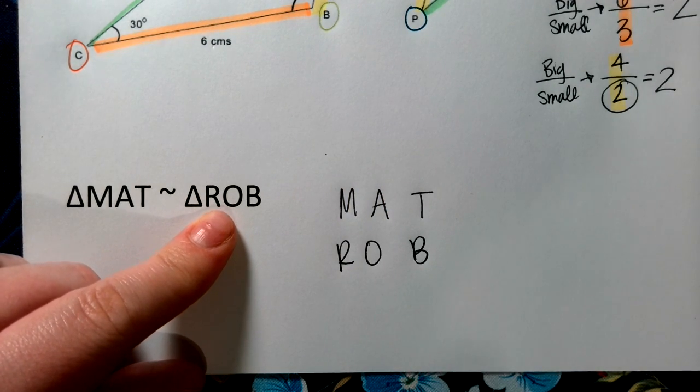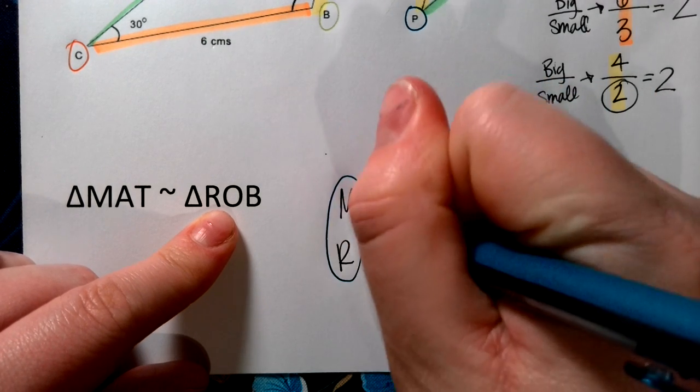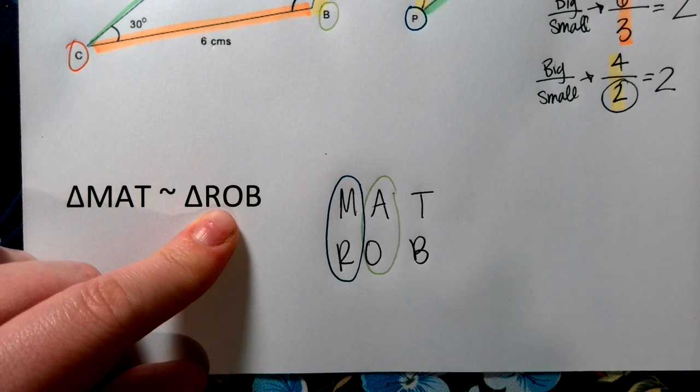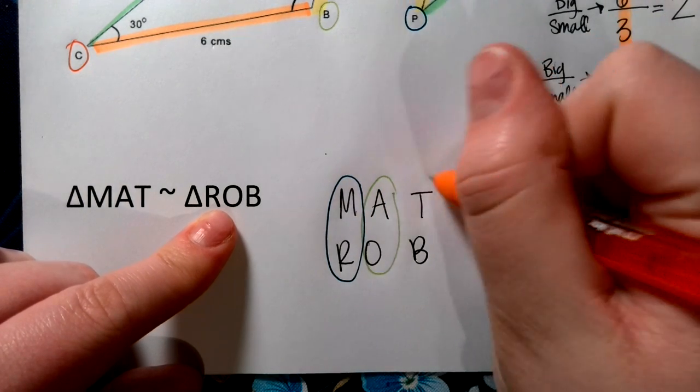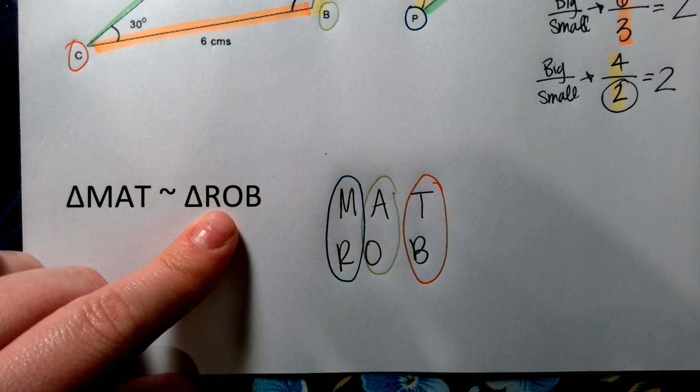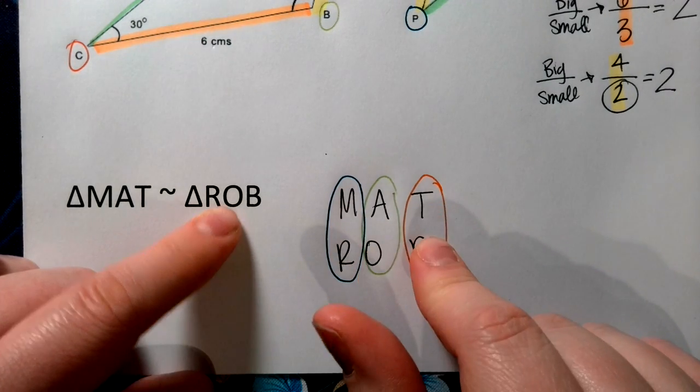When we stack those letters, we're showing that the M and the R, they are corresponding angles. A and O, they are corresponding angles. T and B, they are corresponding angles. They all go with each other.